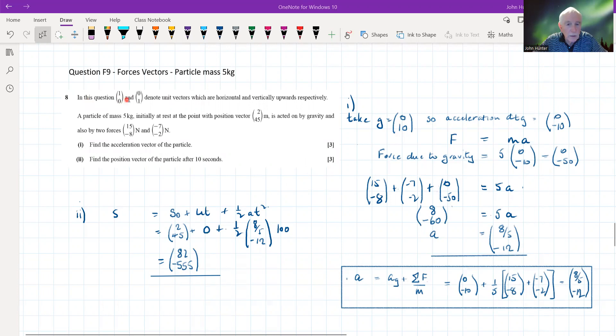In this question, 1, 0 and 0, 1 denote unit vectors which are horizontal, horizontal in a rightward direction, and vertically upwards, respectively.